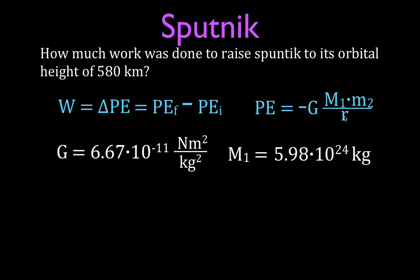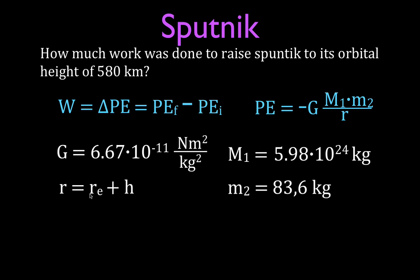m1 is the mass of one of the objects. Since it's orbiting the Earth, capital M1 is usually the mass of the more massive central object. m2 is the mass of the other object — Sputnik had a mass of about 83.6 kilograms. Now r is very important: r is the distance from the center of the Earth. Sputnik is orbiting the Earth, so it's not just the height above but the distance from the center of the Earth to the satellite.